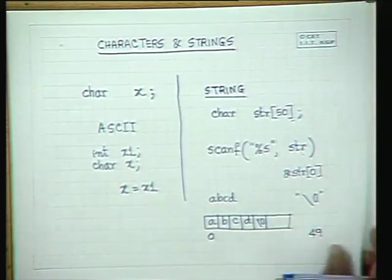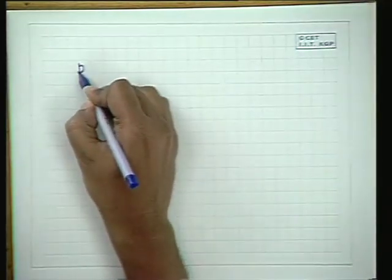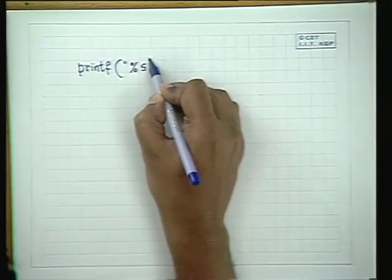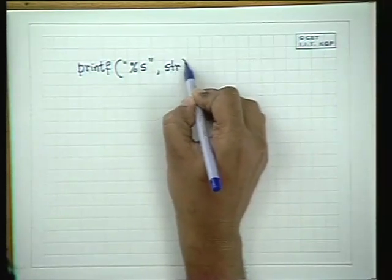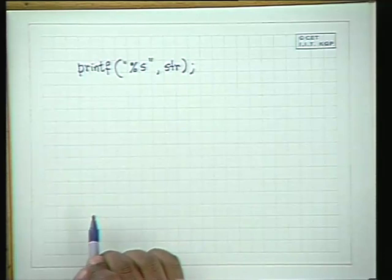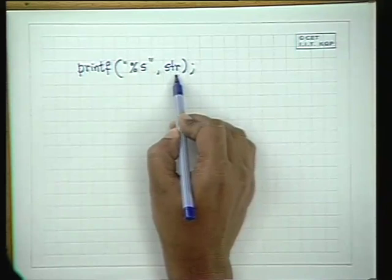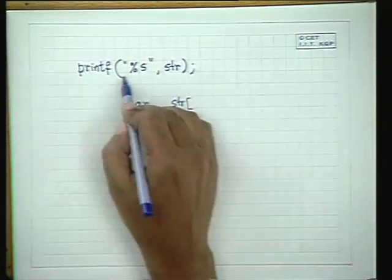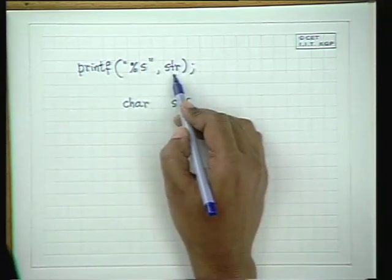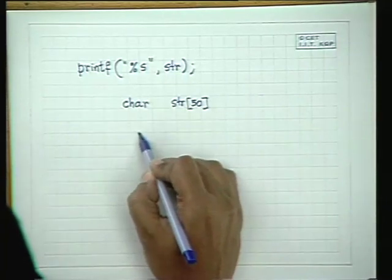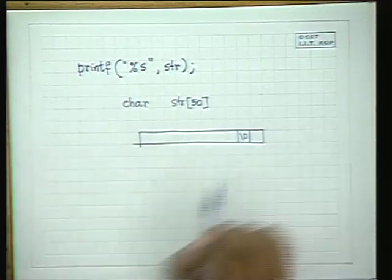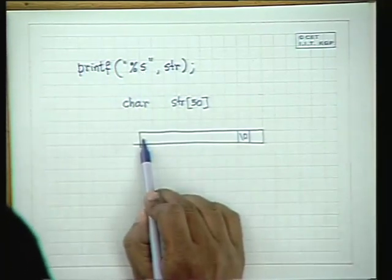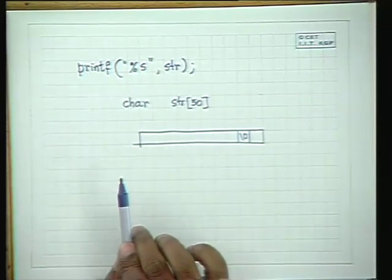Similarly, like scanf, for strings you can use the printf command with %s — you just give the string and it will print it. Whatever you print in %s format must be defined as a character array, and the data must end with a backslash-0. If there is no backslash-0, the printing in %s format will go on continuing till the end.